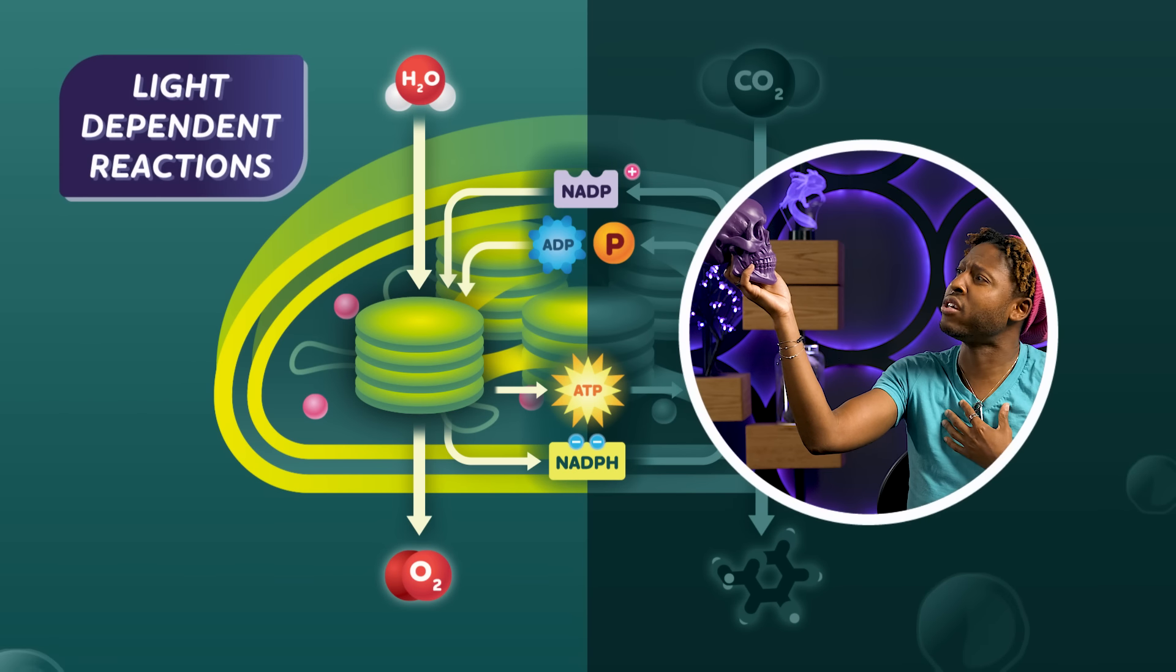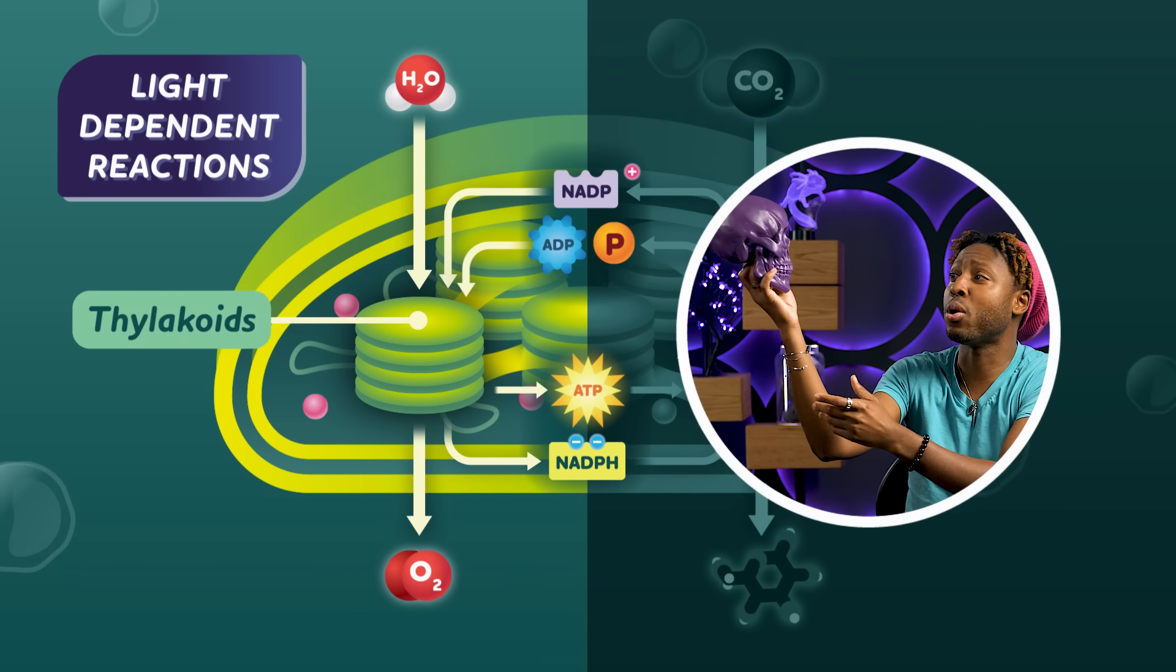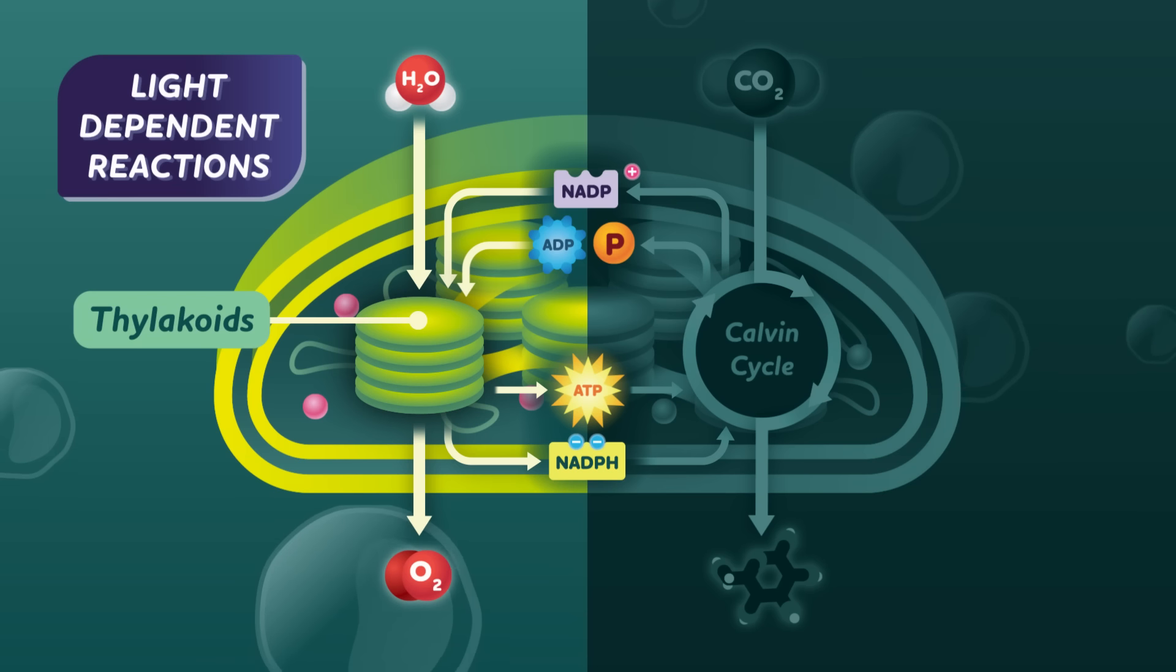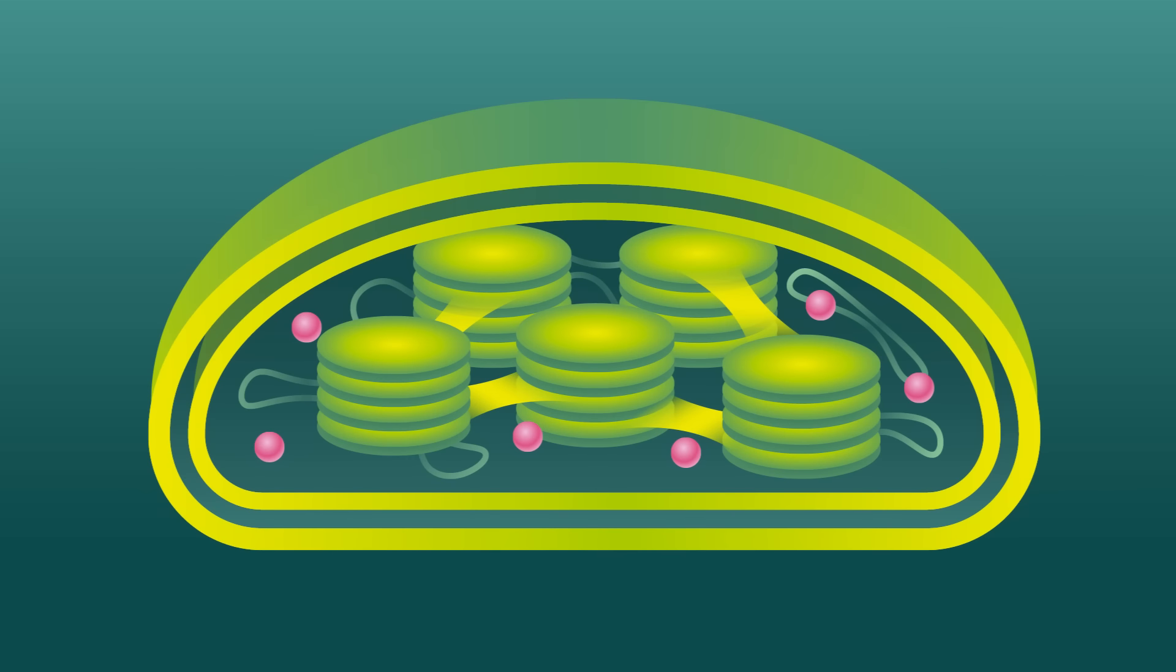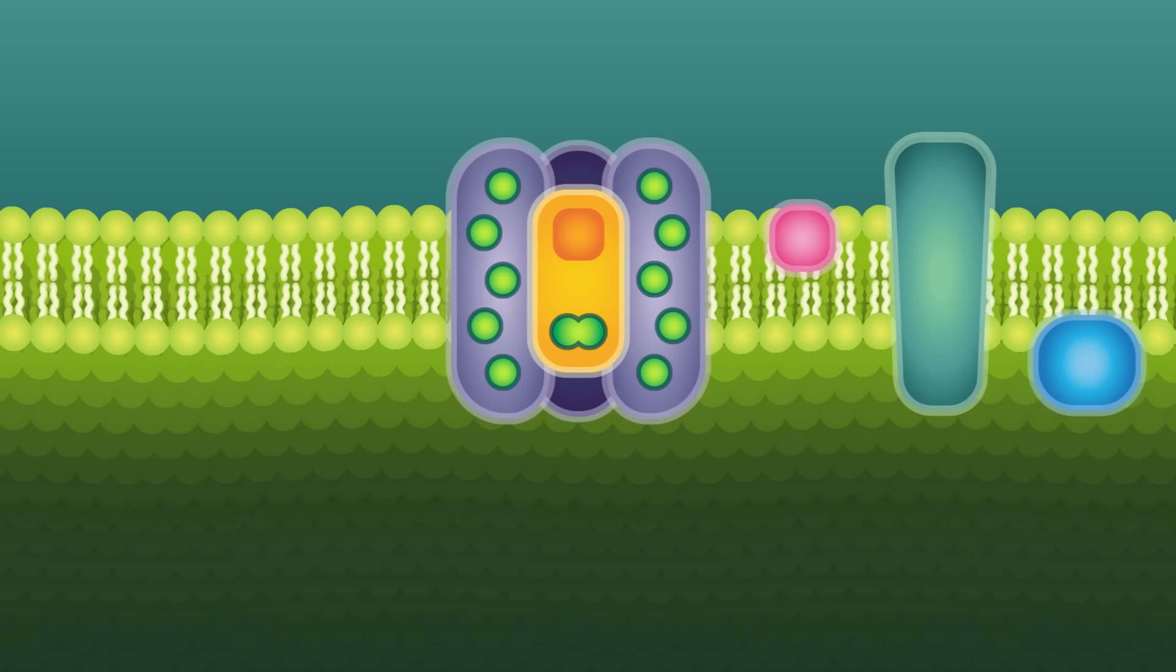Act 1. The light-dependent reactions. Setting: the thylakoid. Now, I probably don't need to say this, given the name, but the light-dependent reactions need light to work. And they take place in the thylakoid membranes, encasing those little green coins. See, those membranes are packed with chlorophyll, a pigment that gives green plants their color.